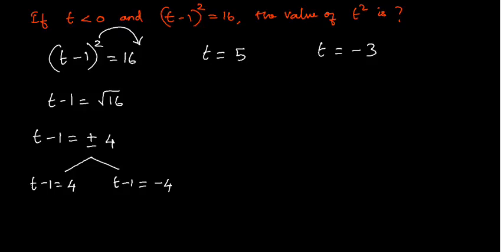But the first piece of information says t has to be less than 0, meaning t has to be negative. So I consider only the second value, t = -3. I don't consider t = 5 because t has to be negative.